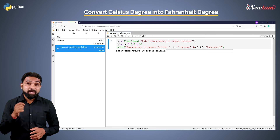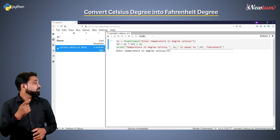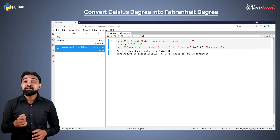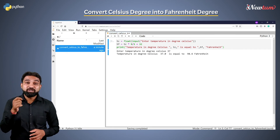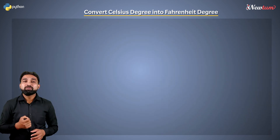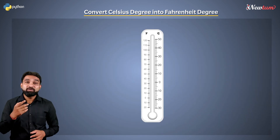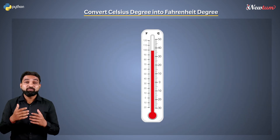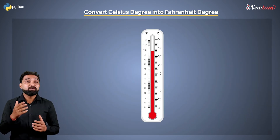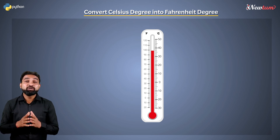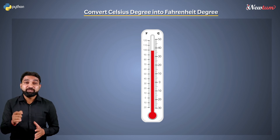Enter the input as 37. This is the fever temperature of our body — you must have heard from the doctor that you have a fever of 100 or 101. That is nothing but your body temperature in Fahrenheit.